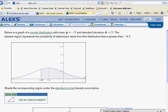This section of ALEKS Statistics covers normal versus standard normal density curves. Below is a graph of a normal distribution with mean μ = -3 and standard deviation σ = 3. The shaded region represents the probability of obtaining a value from this distribution that is greater than -4.5.